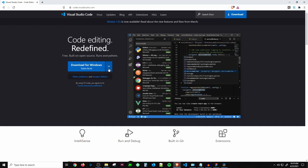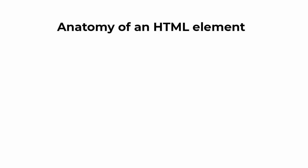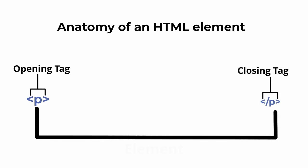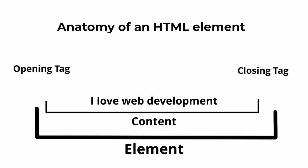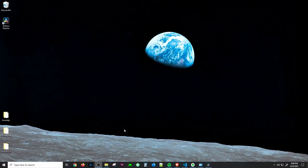Let's take a closer look at the anatomy of an HTML element. As you can see, we have an opening and closing tag. The opening tag consists of the name of the element — in our example it's the tag — and the content is the content of the element, which is 'ilab web development.' The closing tag is the same as the opening tag except that it includes a forward slash before the element name.